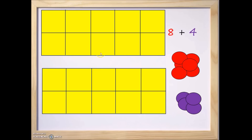These are 10 frames. The top part here is basically a large rectangle with 10 squares: 1, 2, 3, 4, 5, 6, 7, 8, 9, and 10.